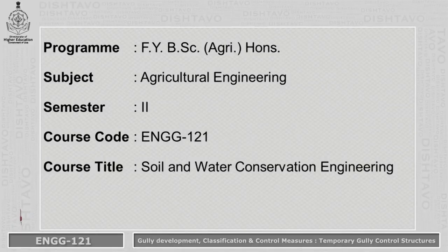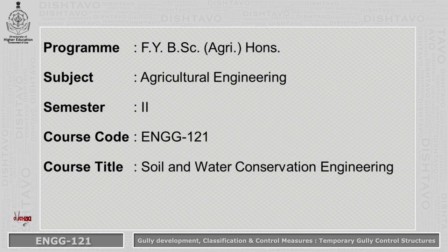Welcome all the students. Today we will discuss about module number 8 for the program first year B.S. Agriculture Honors, for the subject Agricultural Engineering, second semester. The course code is Engineering 1 to 1 and the title of the course is Soil and Water Conservation Engineering.